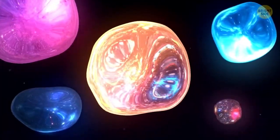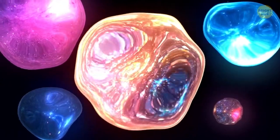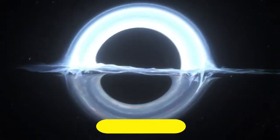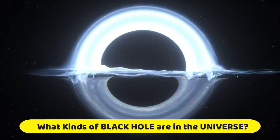Black holes come in many sizes and their size depends on how much matter or mass is in them. So what kind of black holes are in the universe and how they formed?